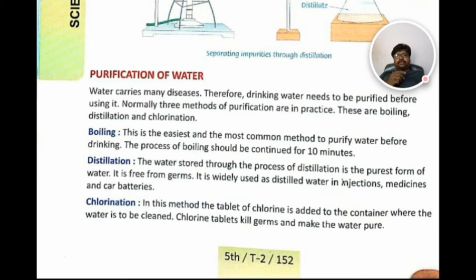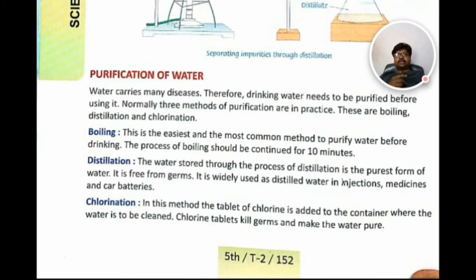The next purification process is chlorination. In this process, a tablet of chlorine is added to the container where the water is to be cleaned. The chlorine tablet kills germs and makes the water pure. Remember the three purification processes: boiling, distillation, and chlorination. Write these in your notebook.